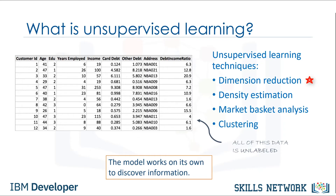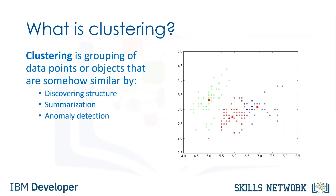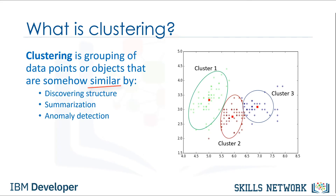Dimensionality reduction and feature selection play a large role by reducing redundant features to make classification easier. Market basket analysis is a modeling technique based upon the theory that if you buy a certain group of items, you're more likely to buy another group of items. Density estimation is a very simple concept mostly used to explore the data to find some structure within it. And finally, clustering — considered to be one of the most popular unsupervised machine learning techniques — is used for grouping data points or objects that are somehow similar. Cluster analysis has many applications in different domains, whether it be a bank's desire to segment its customers based on certain characteristics, or helping an individual organize and group his or her favorite types of music. Generally speaking, clustering is used mostly for discovering structure, summarization, and anomaly detection.